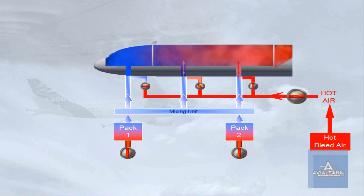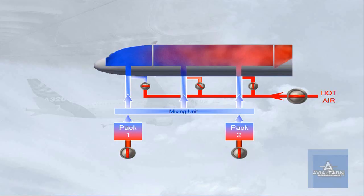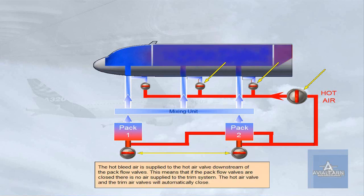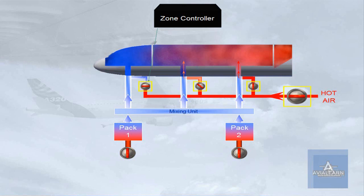The trim air valves are supplied via a hot air valve. It regulates the pressure of the hot air supplied to the trim system and works as a shut-off valve. The hot bleed air is supplied to the hot air valve downstream of the pack flow valves. This means that if the pack flow valves are closed, there is no air supplied to the trim system, and the hot air valve and the trim air valves will automatically close.